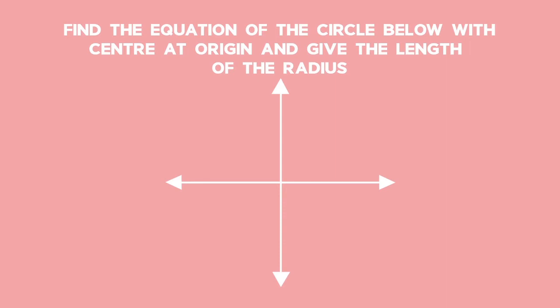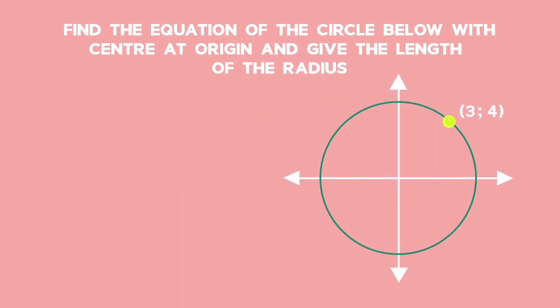It is given that the centre of the circle is the origin and that the circle passes through the point 3, 4. We can use the general equation x squared plus y squared equals r squared and substitute our point 3, 4 into the equation to work out the length of the radius.